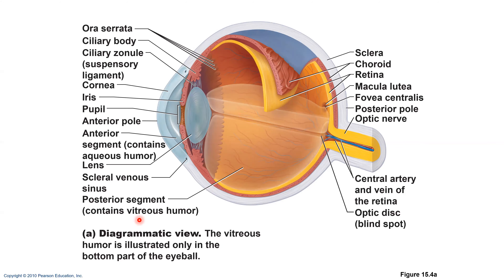The last part of the vascular layer is the iris — the colored part of the eye that gives your eye its brown, green, or blue color. Inside the iris there is an opening, a hole that appears black — that's your pupil. The pupil is the central opening that regulates the amount of light entering the eye.